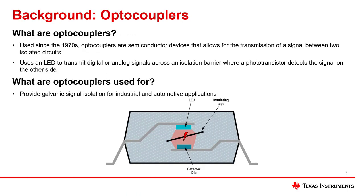What are optocouplers? Optocouplers are semiconductor devices that have been used since the 1970s. They allow for signals to pass through between two different isolated circuits. Optocouplers essentially use an LED on the first side to transmit digital or analog signals to a phototransistor that detects those signals on the second side.